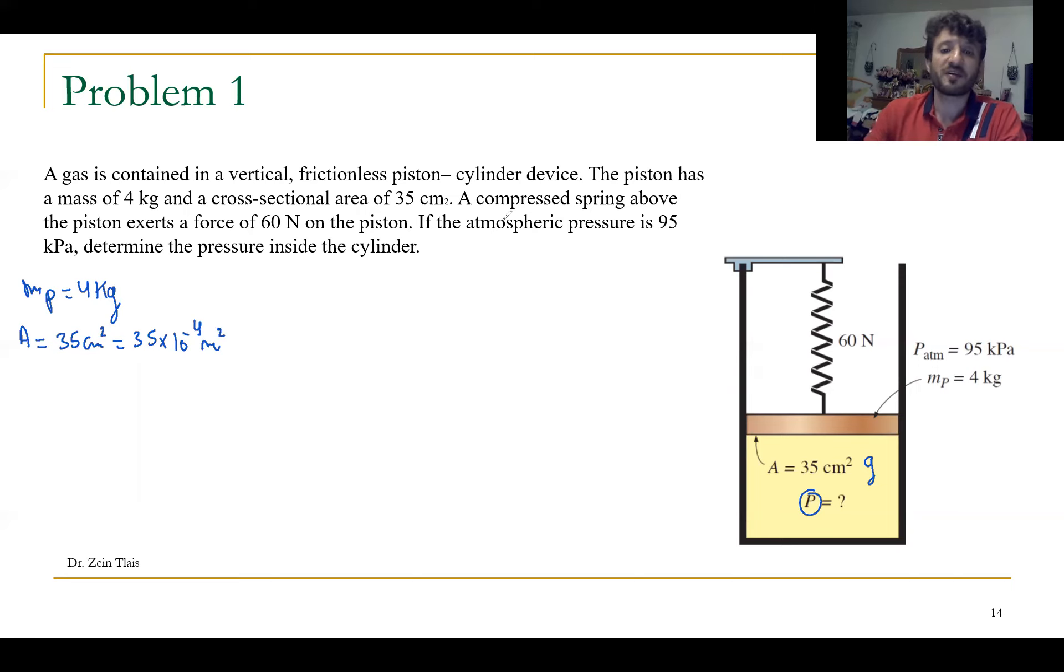We have a compressed spring above the piston exerts a force of 60 Newton on the piston. So we have a spring, we have a compressed spring will push down the piston with a force equals to 60 Newton.